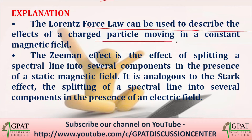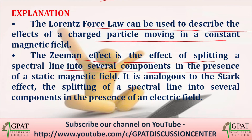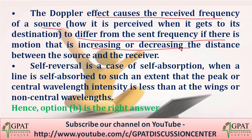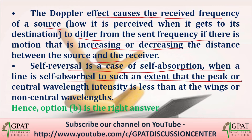The Lorentz force law describes the effects of a charged particle moving in a constant magnetic field. The Zeeman effect is the splitting of a spectral line into several components in the presence of a static magnetic field, analogous to the Stark effect which involves splitting in the presence of an electric field. The Doppler effect causes the received frequency of a source to differ from the sent frequency when there is relative motion between source and receiver. Self-reversal occurs when a line is self-absorbed to such an extent that the central wavelength intensity is less than at the wings. So option B is the correct answer.